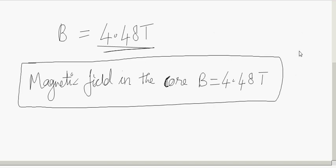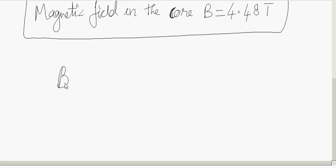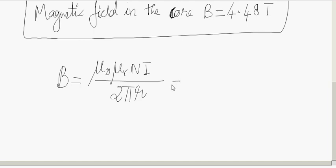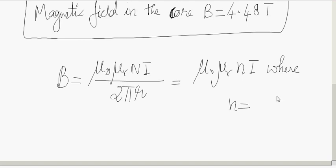In some cases, you may see the formula written as B equals mu naught times mu r times N times I divided by 2 pi r. In some books, instead of capital N divided by 2 pi r, you may find it written as small n times I, where small n equals N divided by 2 pi r, which is the number of turns per unit length.